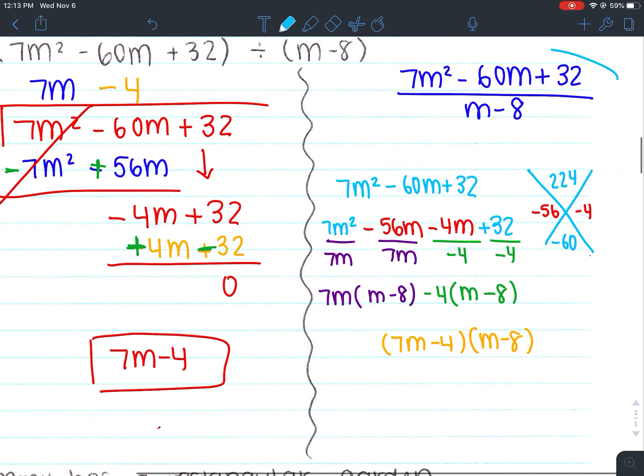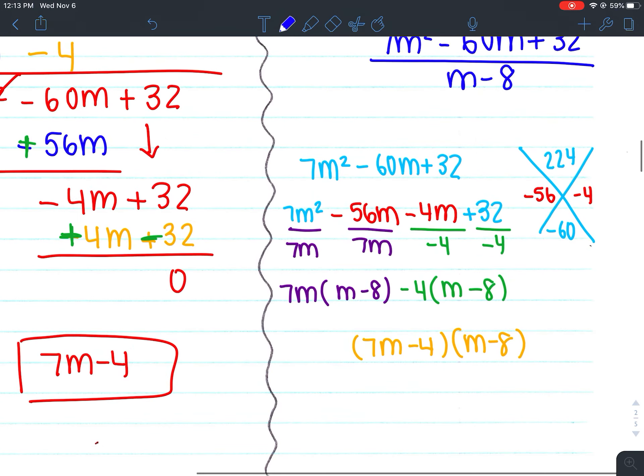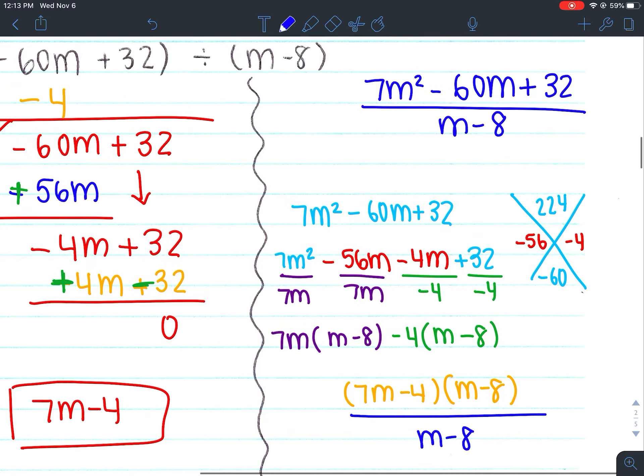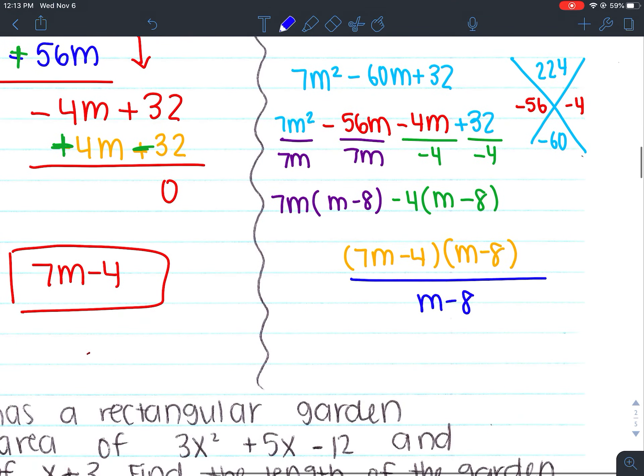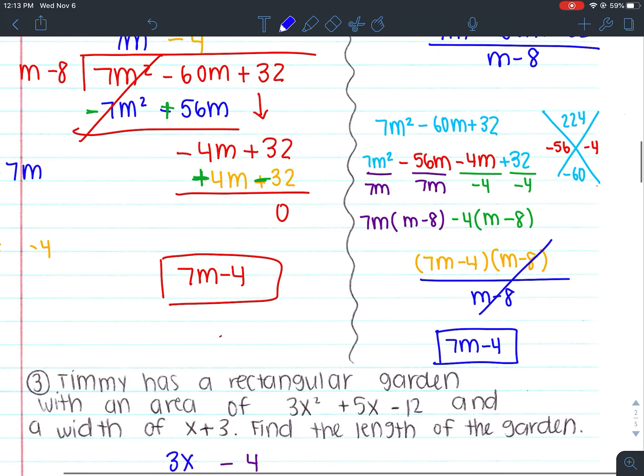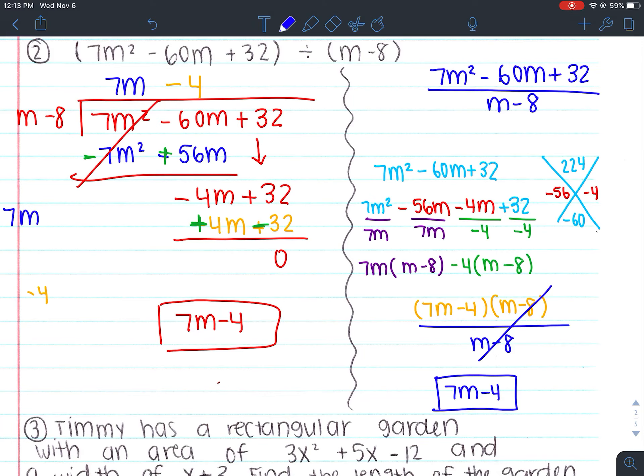Okay. But don't forget that this was our original expression. So that would be that over m - 8, right? So we're rewriting it. Then you look for your factors that are similar and you're going to reduce. So here we would reduce and cross these out. So our remaining factor, our remaining expression would just be 7m - 4, which is the same thing we got the first time that we did the long division.